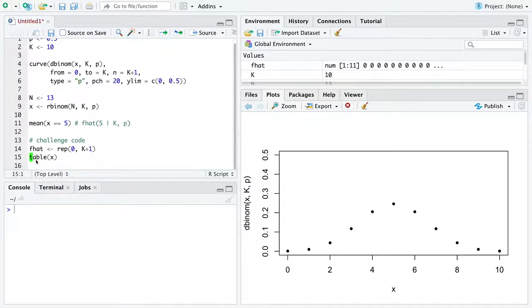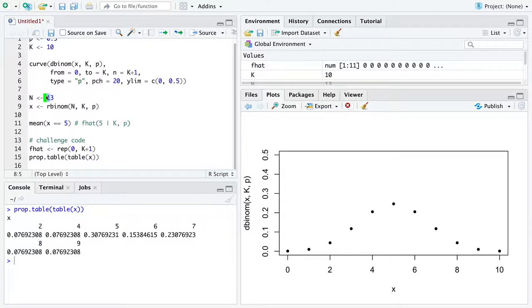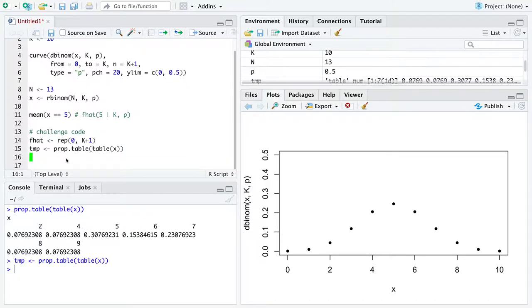So I don't want just the counts of the values. What I want are proportions of those values. I want all of the counts divided by this number of observations, 13. So I'm going to store that into a not cleverly named variable, temp, and run it and then print it out if you need to.